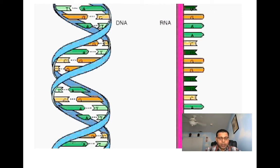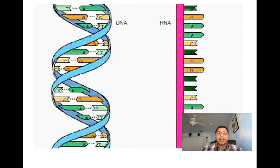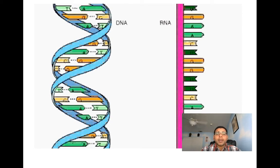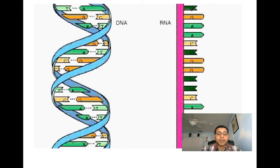There are three major types of RNA molecules: mRNA (messenger RNA), tRNA (transfer RNA), and rRNA (ribosomal RNA), which we saw making up the ribosomes. Each has a specific role in carrying out DNA's instructions.